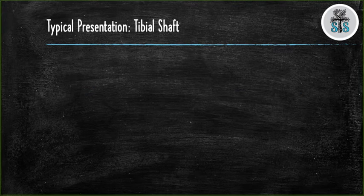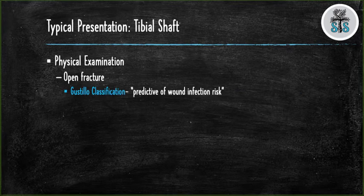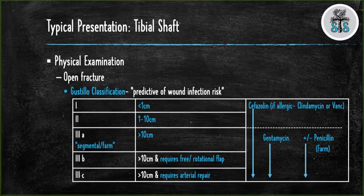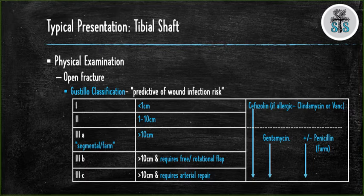Tibial shaft fractures have a higher incidence of being open. The Gustilo-Anderson classification is used to classify open fractures, and is predictive of the risk of wound infections. Type 1 has an infection rate of approximately 2%. Type 2 has an infection rate between 2 to 10%. Type 3 has an infection rate of 25 to 50%. Type 1 is when the wound is less than 1 cm. Type 2 is when the wound is between 1 to 10 cm. Type 3 is when the wound is greater than 10 cm, or if the fracture is segmental, or if it was due to a farm injury.